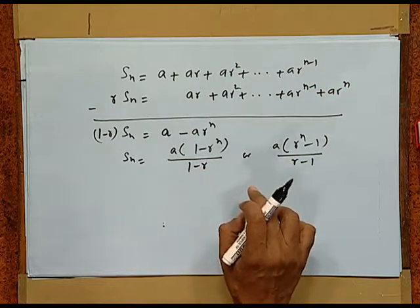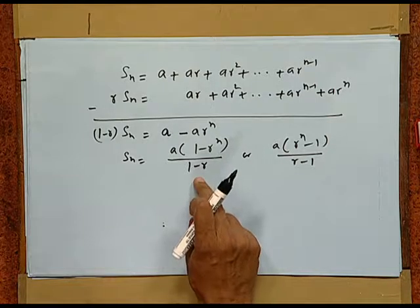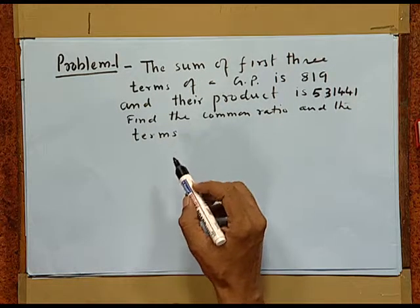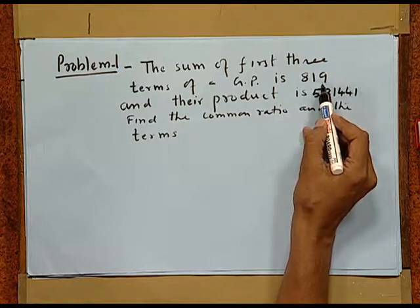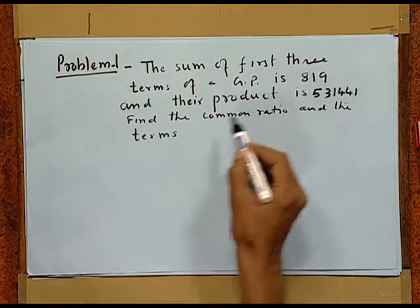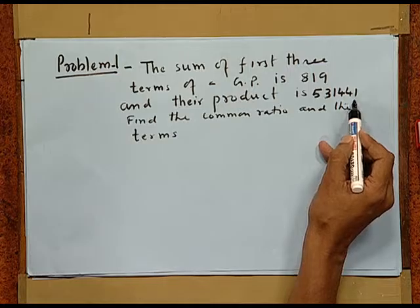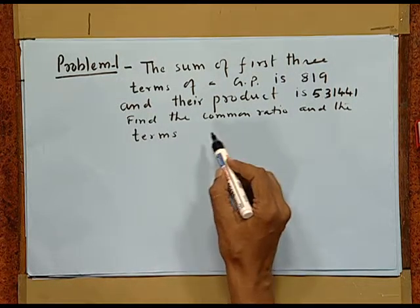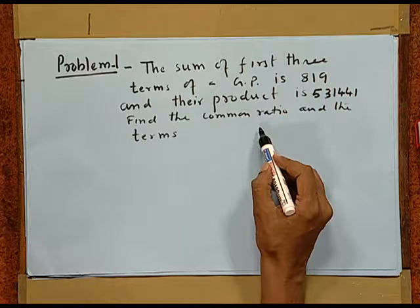So we have two forms for Sn. Usually, we use the first form when r is less than 1 and the second form when r is greater than 1, but both are correct in both cases — it is only a matter of convenience. Now, with these two formulae, we can start solving any type of problems. Let us take a problem. Here, the sum is given to be 819 for three terms, and the product is given to be 531441. We are required to find the common ratio as well as the three terms.